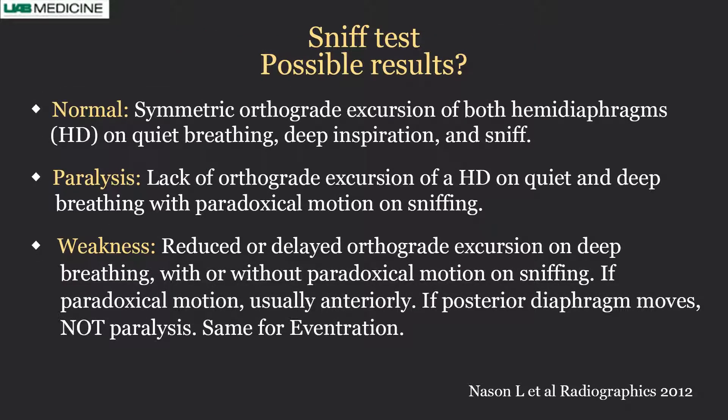When you do sniff testing, normal findings show regular movement of the diaphragm during normal breathing, deep breathing, and sniffing — both sides move in the same direction. If paralyzed, the diaphragm will not move and with sniffing will move paradoxically in the wrong direction. If weak, you'll see movement of both diaphragms, but the weak one moves less, and with sniffing may show paradoxical movement. Importantly, not every paradoxical movement means paralysis — it can indicate weakness.